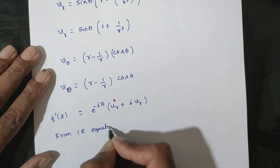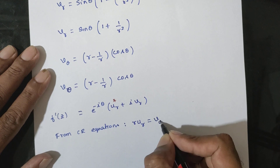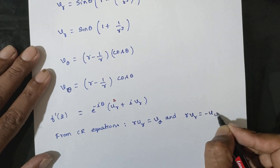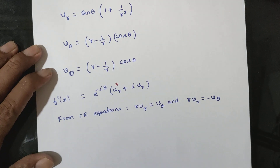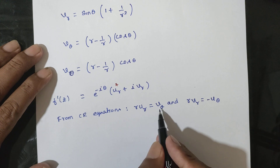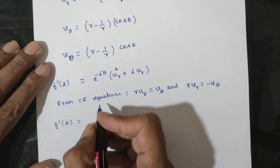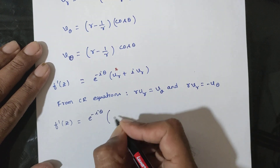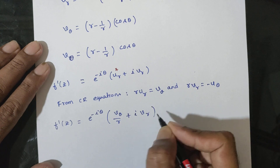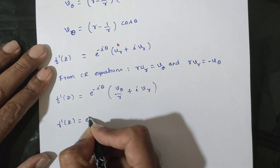From the CR equations in polar form: r·Ur = Vθ and r·Vr = -Uθ. The formula for the derivative is f'(z) = e^(-iθ) · (Ur + i·Vr), which we can also write using Vθ/r in place of Ur.